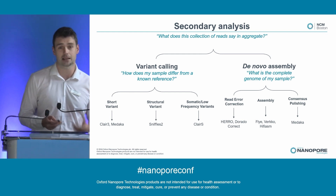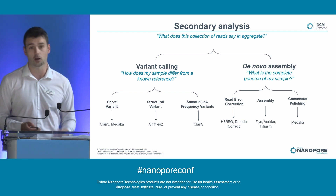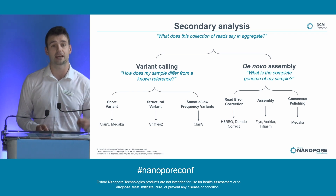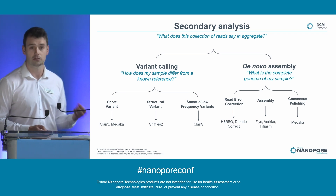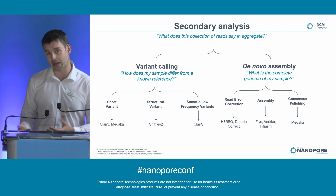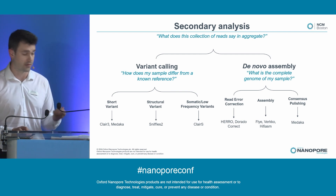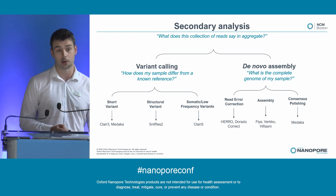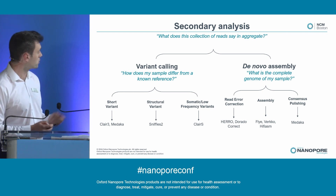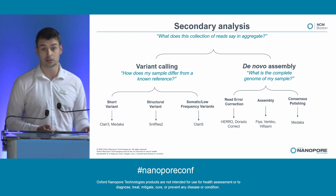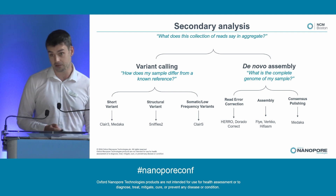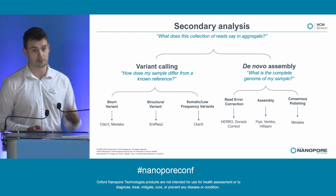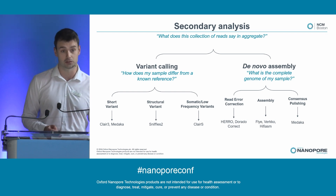Broadly, we can split secondary analysis into two main categories. We've got variant calling, where we have a trusted reference sequence and we want to say how does my sample differ from that reference. And on the other hand, we've got de novo assembly, where we don't have a reference sequence and instead need to construct it with the reads we're getting from our sample. You can see on this slide some of the tools we use in our workflows - some are internally developed, many are developed by external collaborators and from academia, and we're very thankful to all these people.